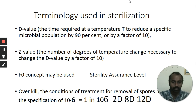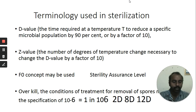The Z value is the number of degrees of temperature change that will change the D value by a factor of 10. The Z value precisely determines how well your sterilization cycle is accelerated. The F0 concept is the next important parameter to understand.